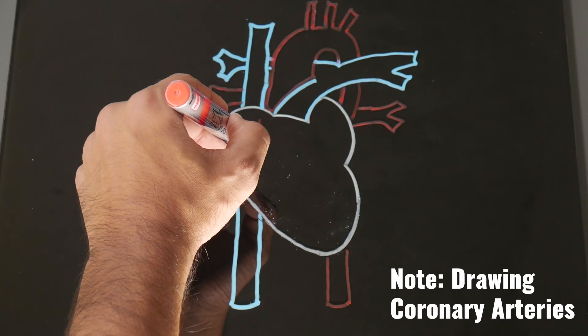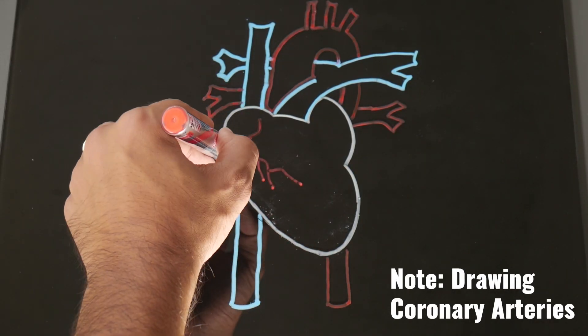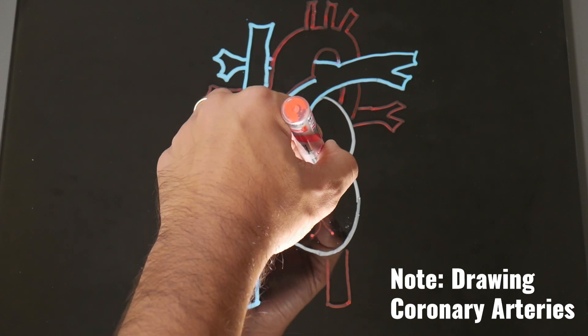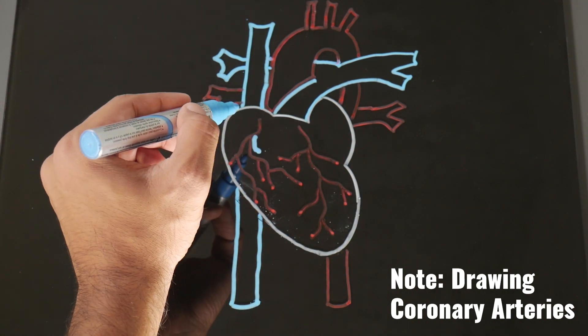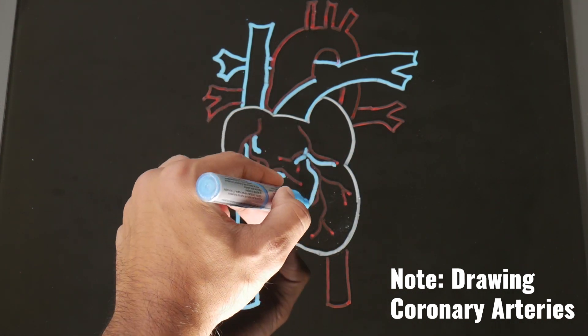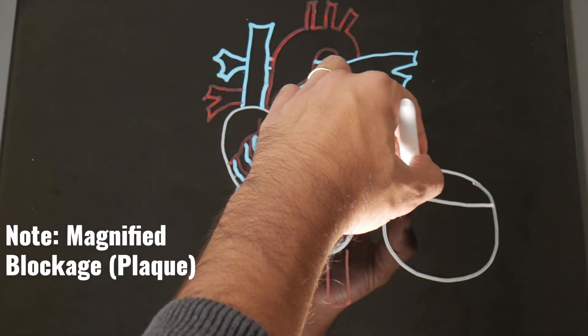Well, let me explain. The heart has coronary arteries, and that's basically where the oxygenated blood passes through. But the problem is a person receives a heart attack whenever there is some type of blockage that's in the way.